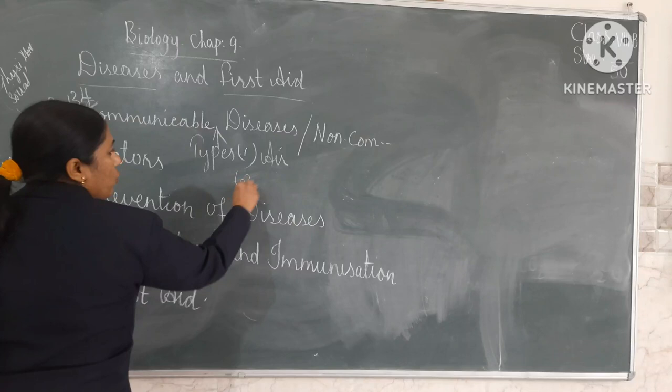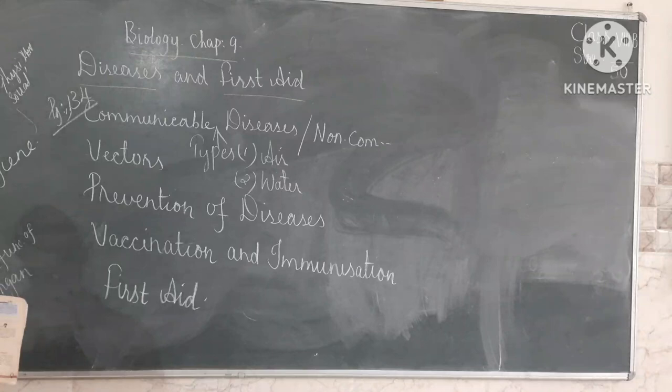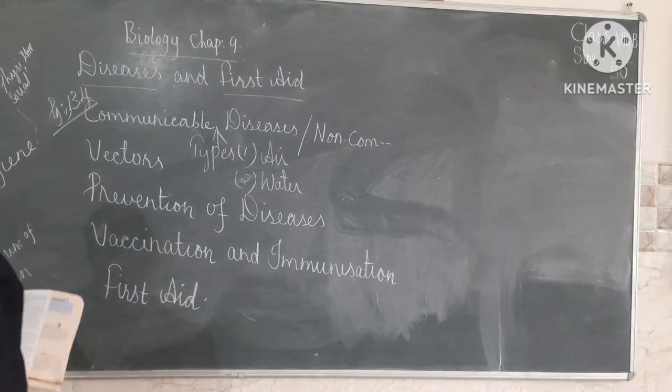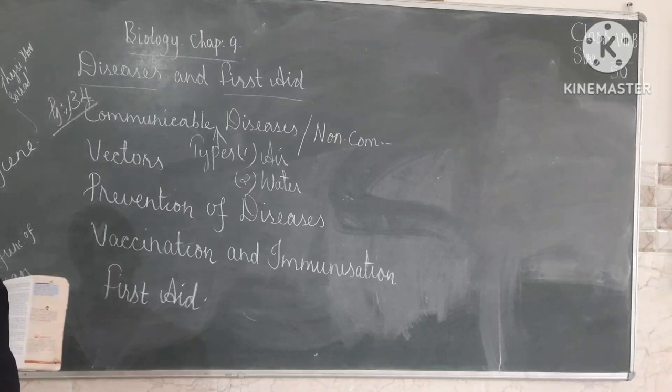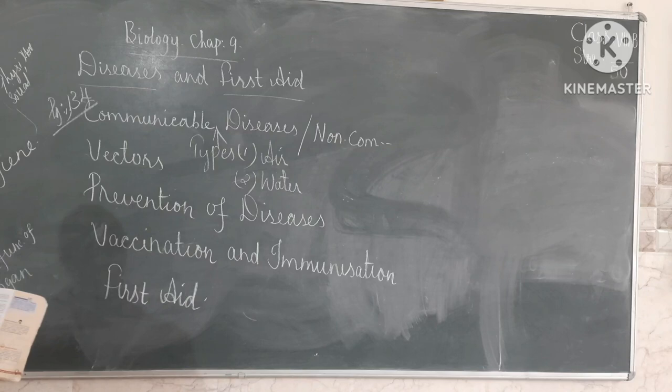The second type is waterborne diseases — diseases that spread through water. For example, contaminated or impure water that people are using can cause the spread of waterborne disease. We should always use water that is free from germs; otherwise, this will lead to waterborne disease.